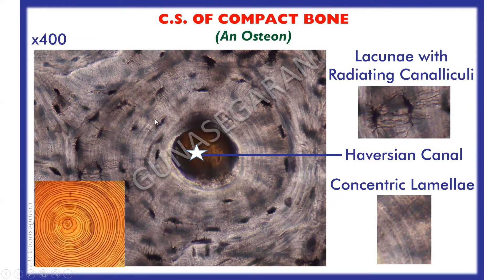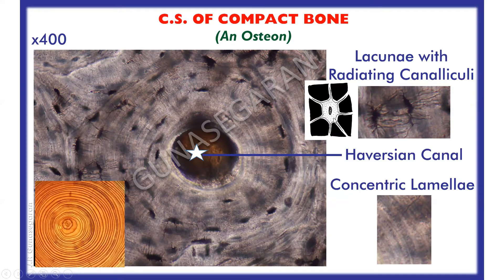Between the lamellae are elliptical lacunae with radiating canaliculi. These lacunae and radiating canaliculi are normally filled with osteocytes. The lacuna contains the osteocytes and the canaliculi contain the cytoplasmic processes of the osteocytes. The canaliculi of one lacuna communicate with those of the neighboring lacuna, and also communicate with the Haversian system, forming a network of interconnecting canals and canaliculi.